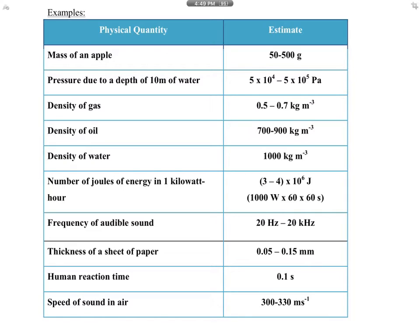But there are also other things that you can memorize. For example, like density of water, density of oil, density of gas, all these values must be memorized. Like density of gas is between 0.5 to 0.7 kg per meter cubed. Density of oil is about 900. Density of water is 1000. Density of seawater, which is slightly more dense, is about 1030.